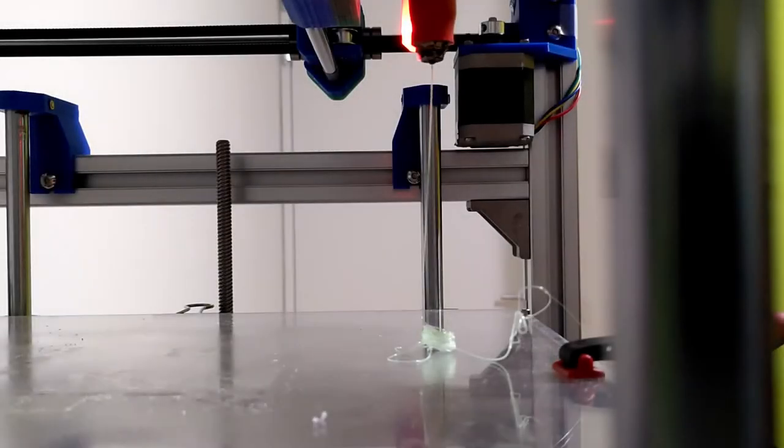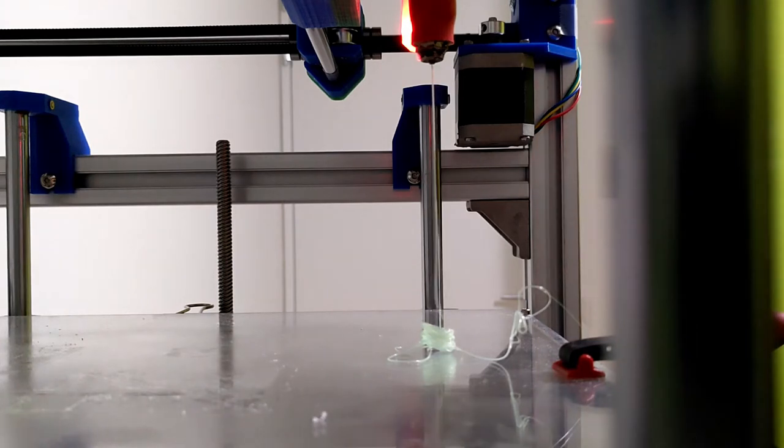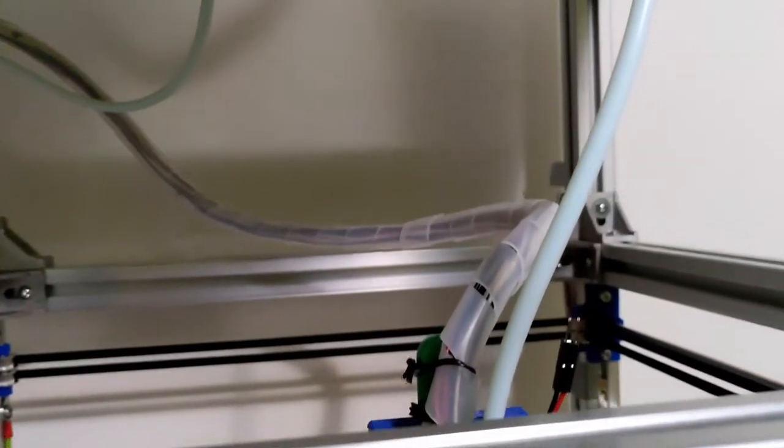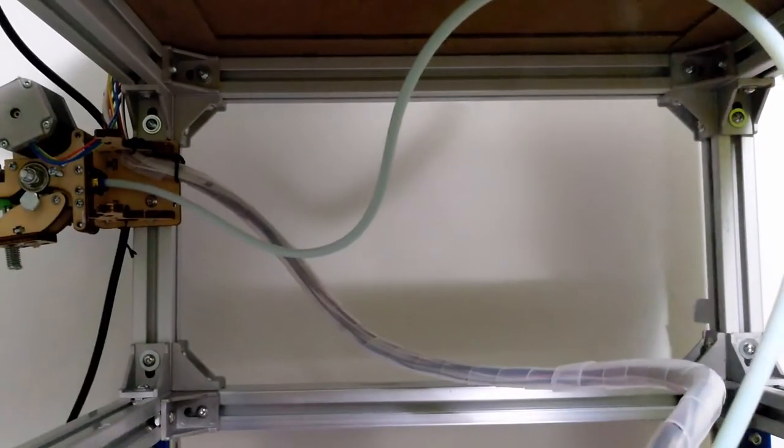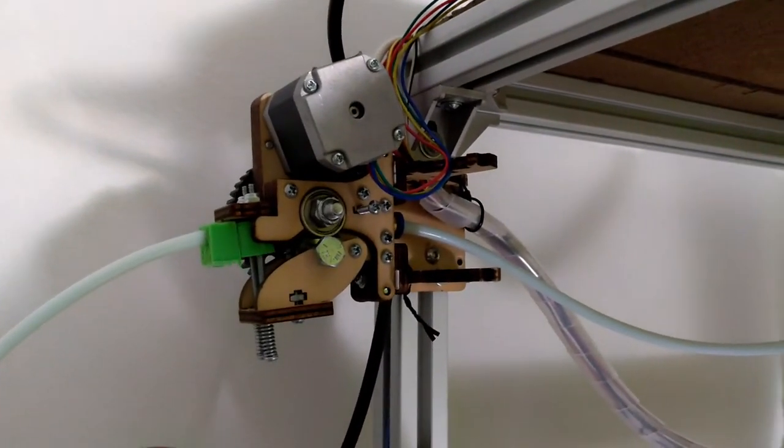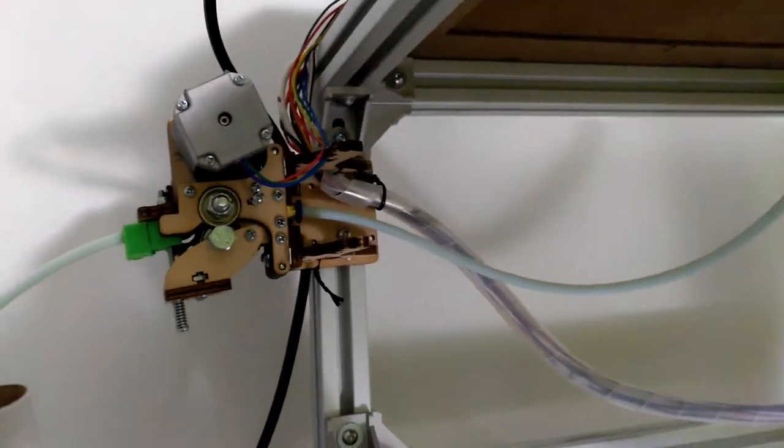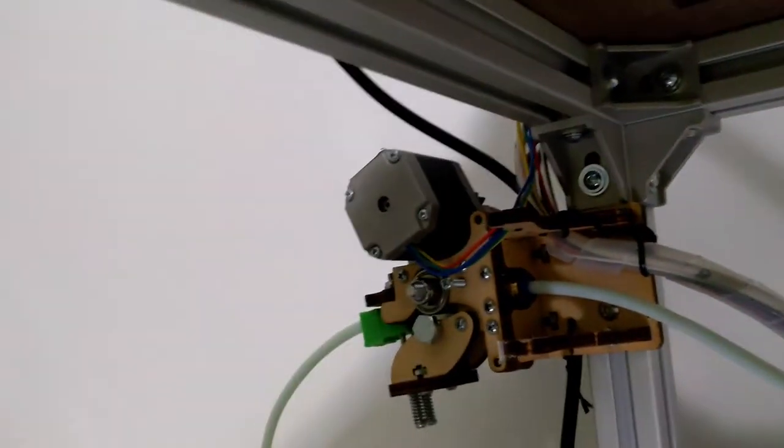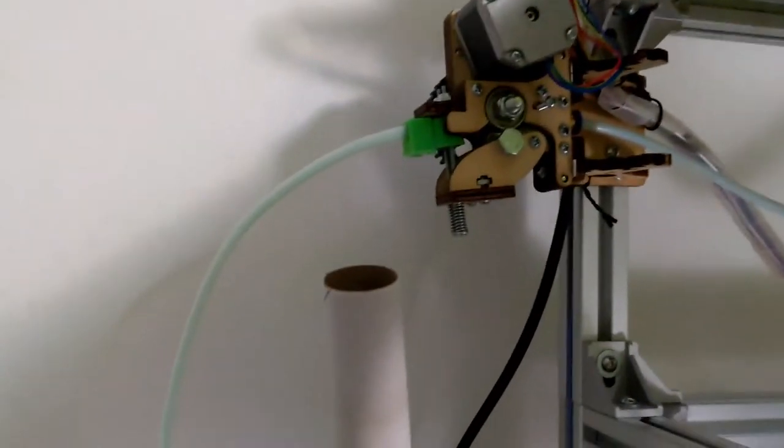Now the printer is extruding at 7.5 cubic millimeters per second. The filament is fed via Bowden tube and this is the old extruder which has been adapted with the attachment for a Bowden tube using scrap plastic.